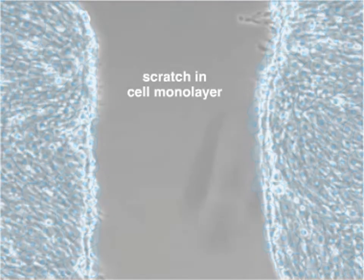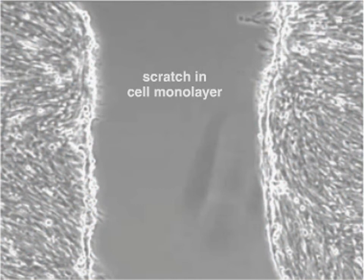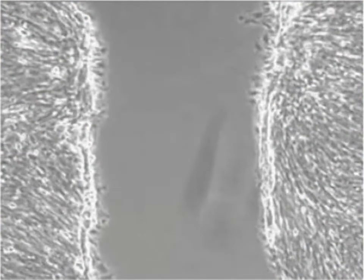The surviving cells at the edge of the wound now do two things. One, they begin to proliferate more rapidly, since they are no longer fully contact inhibited. And two, they migrate into the empty area of the wound, attempting to fill it up.